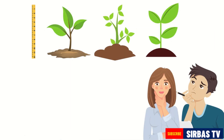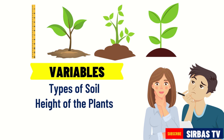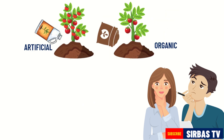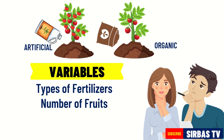Consider this scenario. You want to find out the effect of the different types of soil on the height of the plant. The different types of soil that we use and the height of the plants are the variables in this scenario. Next example: you want to measure the effect of artificial and organic fertilizer on the number of fruits that a plant will yield. The variables in this experiment are the types of fertilizer and the number of fruits that a plant will yield.